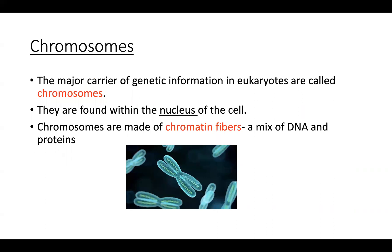Chromosomes are the major carrier of genetic information in eukaryotic cells. All of our genetic information is stored on structures known as chromosomes, which are basically arrangements of DNA and proteins. These chromosomes are going to be found in the nucleus of the cell, and they're made of chromatin fibers — this structure represents DNA wrapped around proteins.